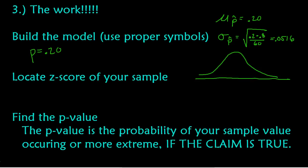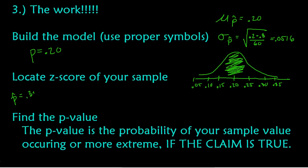I know the distribution is normal because I passed that third condition — 10 or more successes and failures. Right in the center goes the claim of 0.20, then going up by roughly 0.05 gives 0.25, 0.30, and 0.35, and going down gives 0.15, 0.10, and 0.05. This model shows that the large majority of samples should fall in the middle region. My sample of 21 out of 60 — that's 0.35 — falls right out near the tail.